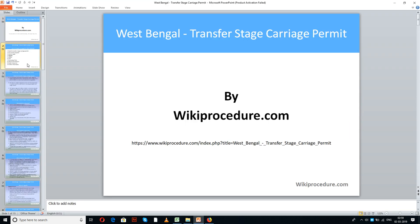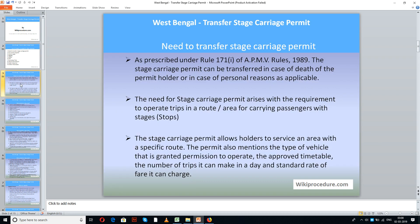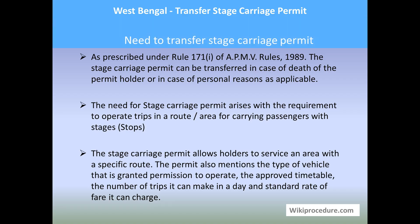List of items covered in this session today: need to transfer stage carriage permit, documents required, how to apply, eligibility, validity, fees, processing time, offices and contacts, online resources, and other information. This procedure is sponsored by wikiprocedure.com for you.